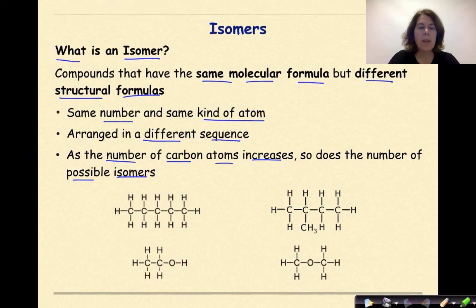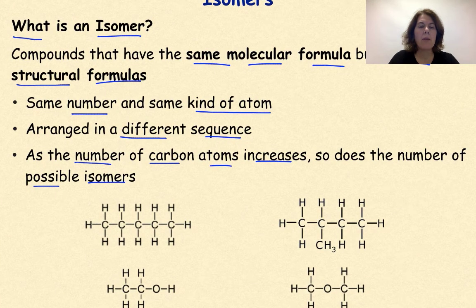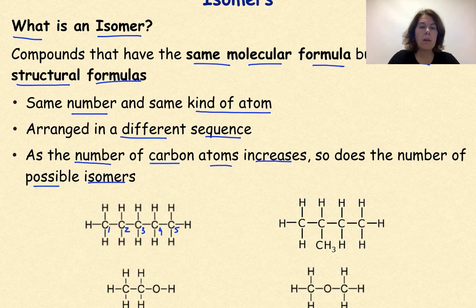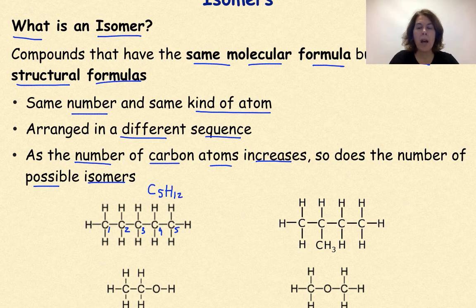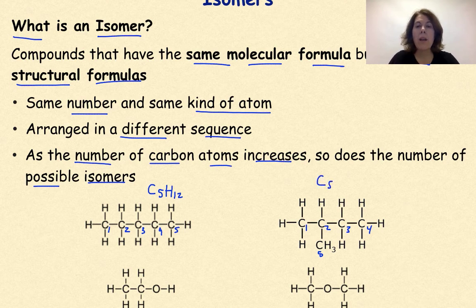Let's look at some examples. Here we have an isomer and I can look through this and say we have one, two, three, four, five carbons. So I'm going to put C5. And then if I count all the hydrogens, I'll see that there are ultimately 12 hydrogens. Then I look over at this isomer over on my right and I'll count the carbons again. One, two, three, four, five, because we don't want to miss this carbon down here. So it would be C5. And again, if I count the hydrogens, it will also have 12 hydrogens.